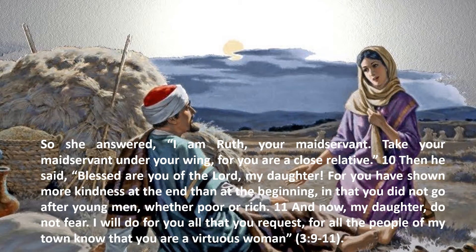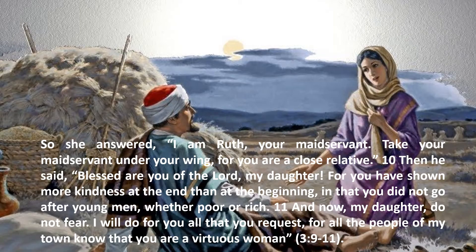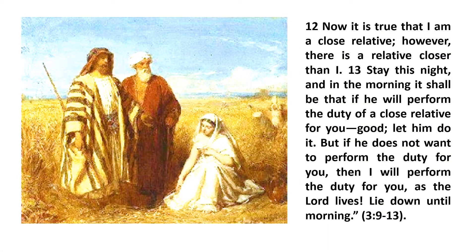Ruth represents the blood-bought Gentile church of Christ who have forsaken false religion. Yet there is an obstacle: Boaz said, 'Now it is true that I am a close relative; however, there is a relative closer than I. Stay this night, and in the morning, if he will perform the duty of a close relative for you, good — let him do it. But if he does not want to perform the duty for you, then I will perform it as the Lord lives. Lie down until morning.' Chapter 3:12–13.